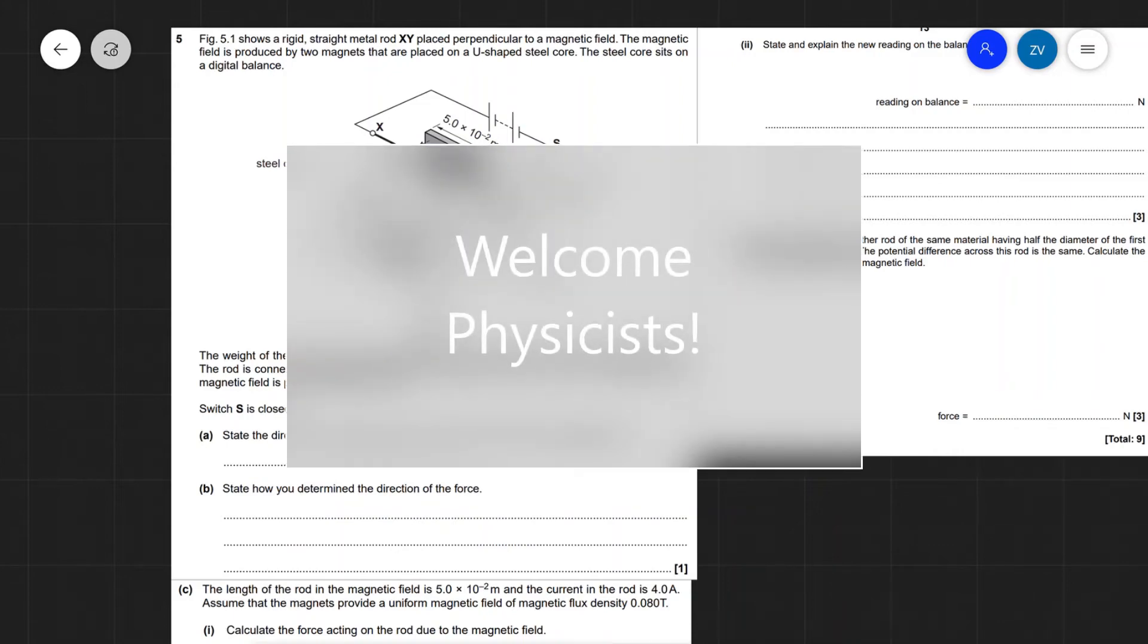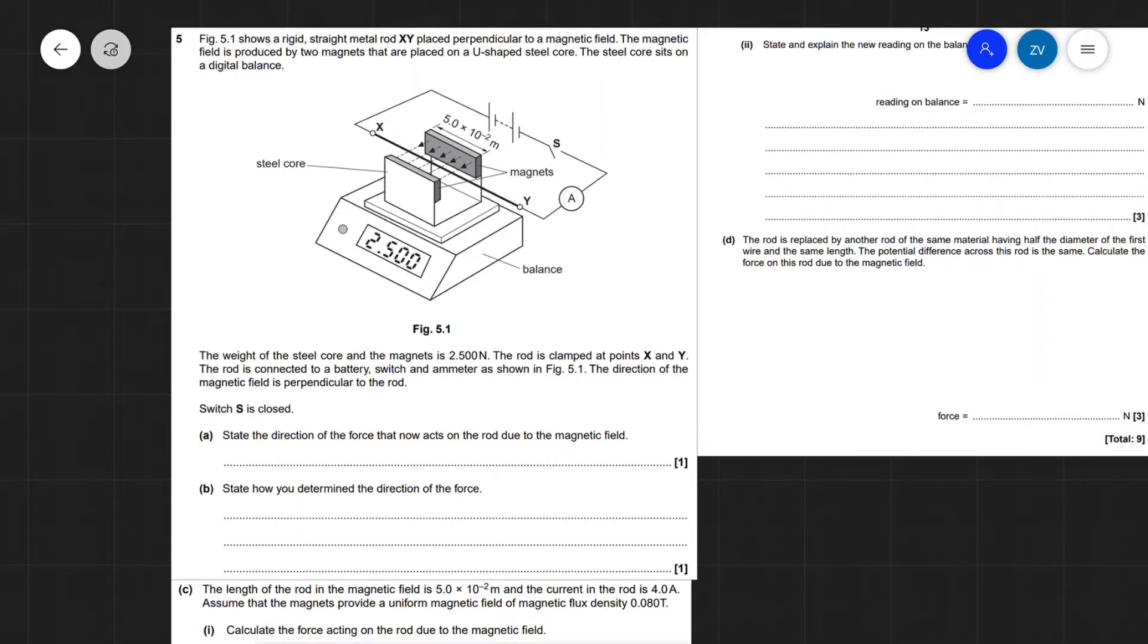Hello everyone, welcome back to another video. Today we are going to be looking at a past paper question from OCR Physics A from June 2011. This question is about a very typical experiment on magnetic fields.